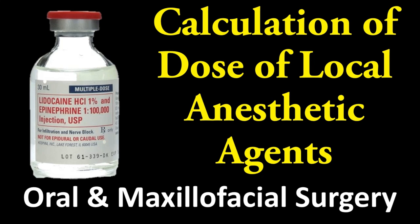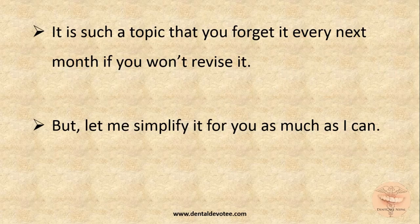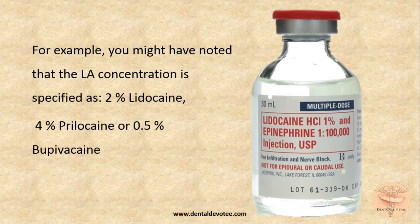It is such a topic that you forget it every month if you don't revise it, but let me simplify it as much as I can. Before jumping into dose calculation, let's understand the concentration of local anesthetic and the vasoconstrictors used in it. For example, you might have noted that the LA concentration is specified as 2% lidocaine, 4% prilocaine, or 0.5% ropivacaine.